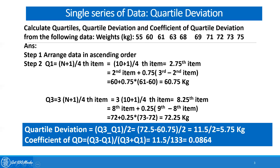N is 10, so 10 plus 1 divided by 4 gives the 2.75th item. Since we have arranged the data, we look at the 2nd item and add 0.75 times the difference between the 3rd and 2nd items. That means 60 plus 0.75 multiplied by (61 minus 60). After calculating, the value of Quartile 1 is 60.75 kilograms.